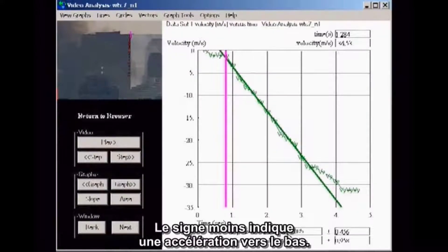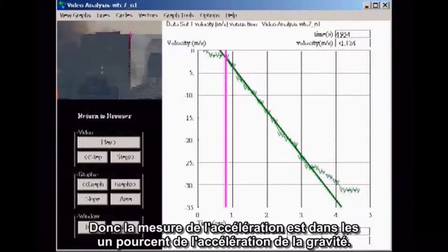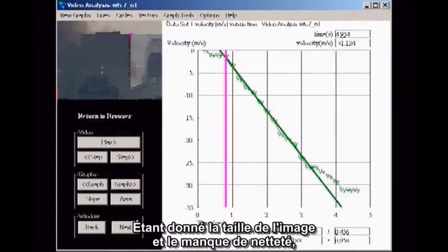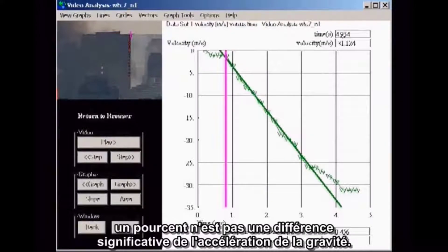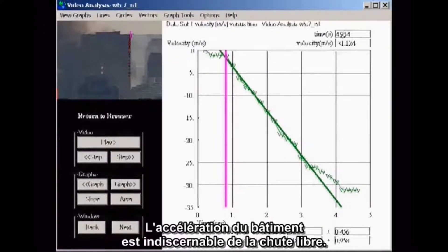The minus sign indicates downward acceleration. The acceleration of gravity for New York City is 9.802 meters per second squared. So the measured acceleration is within 1% of the acceleration of gravity. Given the graininess and size of the image, 1% is not a significant difference from the actual acceleration of gravity. So the most accurate way to characterize the result is to say, the acceleration of the building is indistinguishable from freefall.